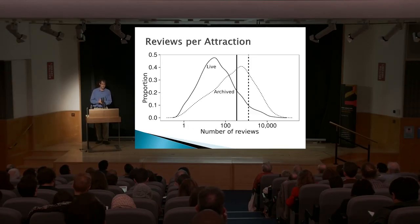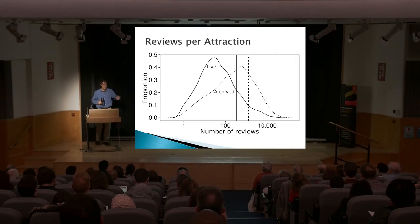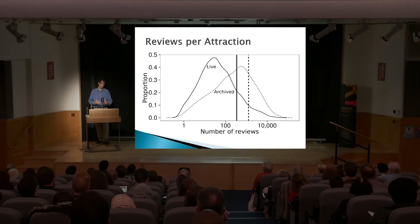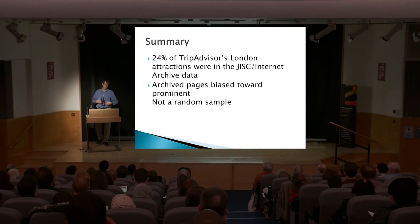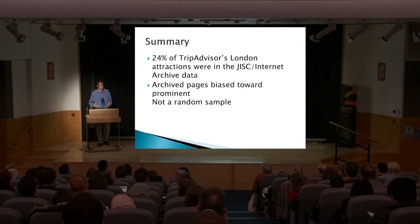Within the TripAdvisor case, one way we could compare those is by looking at the number of reviews that tourist attractions had. On the live site there are significantly fewer reviews per attraction on average than in the archived web pages — i.e., the archive has a bias towards prominent, well-linked, well-known sites. So it's not a representative sample, not a probabilistic sample, and this affects how we're going to analyse that data.